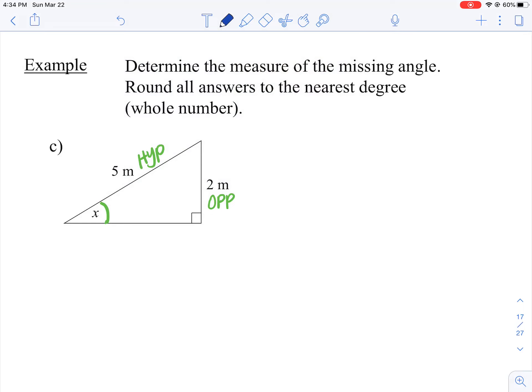Okay, so O and H, that's sine. So sine X is equal to opposite over hypotenuse, so 2 over 5.